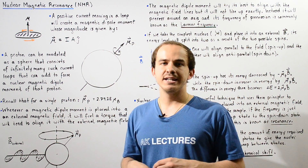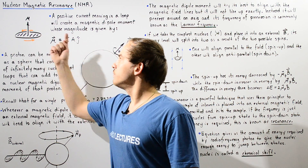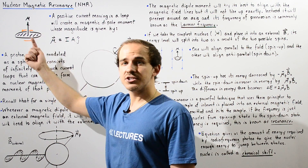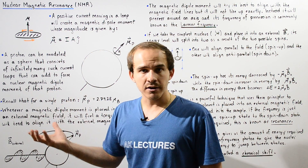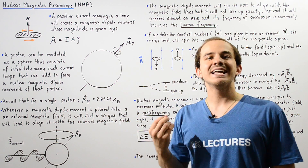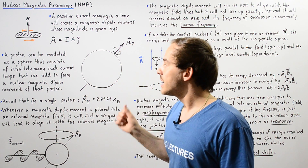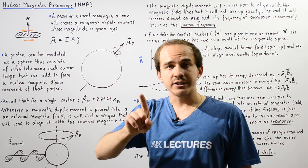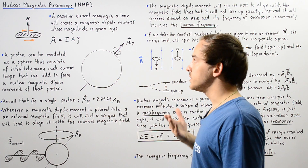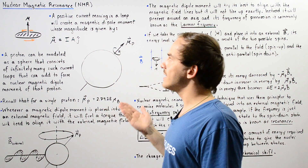What exactly is a magnetic dipole moment and how is one created? Let's imagine a positive electric current moving in the counterclockwise direction. As it moves, it creates a loop with some area A. Such a scenario will create a magnetic dipole moment pointing perpendicular to that area. If the area is A and the current is I, the product of I and A gives us the magnitude of the magnetic dipole moment mu, multiplied by the unit vector j hat.